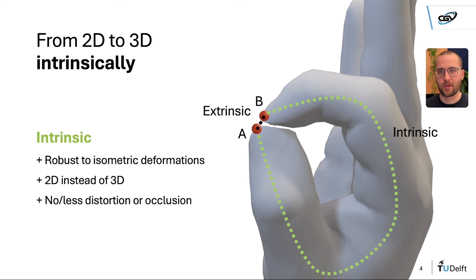The benefit is that you're directly robust to isometric deformations. It's efficient because we work in 2D instead of 3D, and unlike working with image projections, you don't need to deal with distortion or occlusion. I'll cover three contributions we made in this direction.